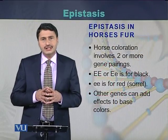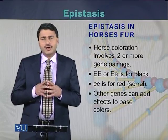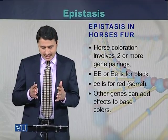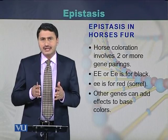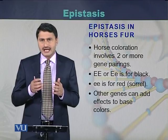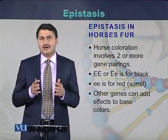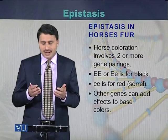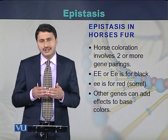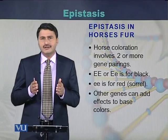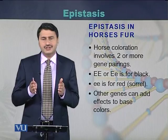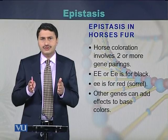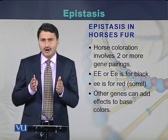Epistasis can also be seen in horses. The coloration of horses is due to two or more genes. If there are alleles EE or Ee — homozygous or heterozygous — the color of the horses will be black, but if the allele is in recessive form, the color of the horses will be red. There are many genes which have an additive effect between these two extremes of black and red.